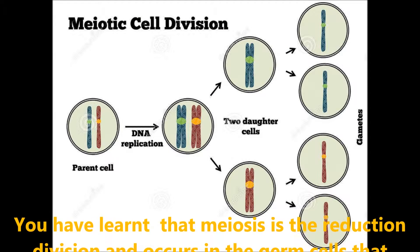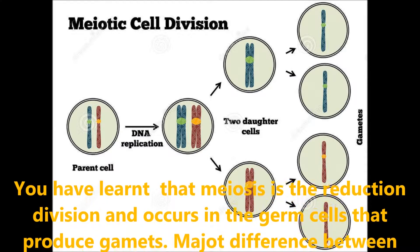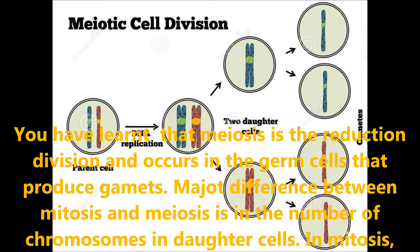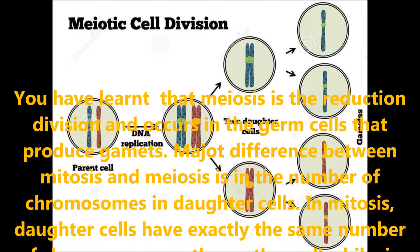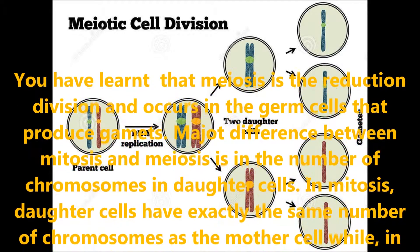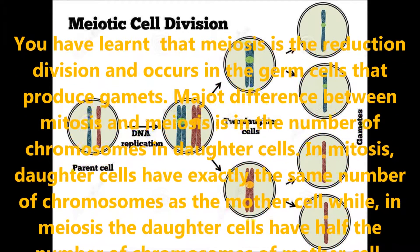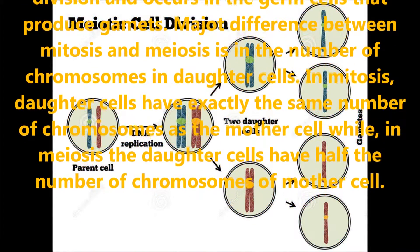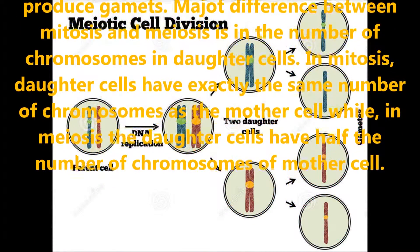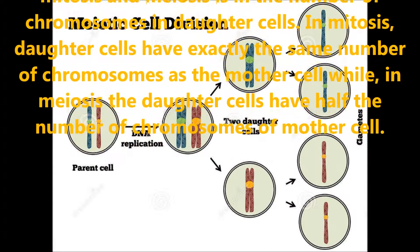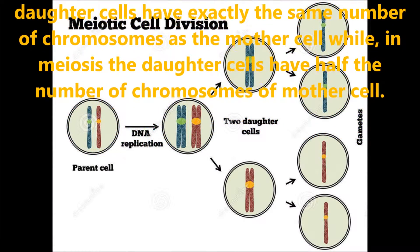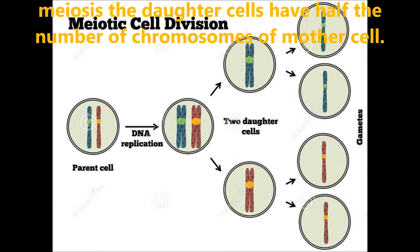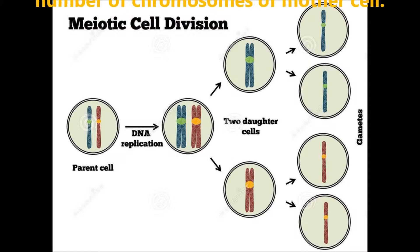Meiosis is the reduction division and occurs in germ cells that produce gametes. The major difference between mitosis and meiosis is in the number of chromosomes in the daughter cell. In mitosis, daughter cells have exactly the same number of chromosomes as the mother cell, while in meiosis the daughter cells have half the number of chromosomes of the mother cell.